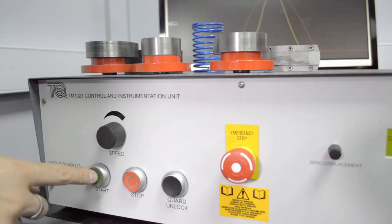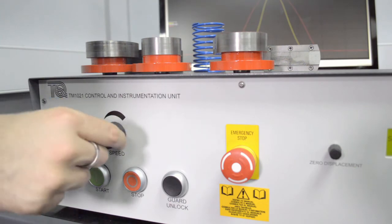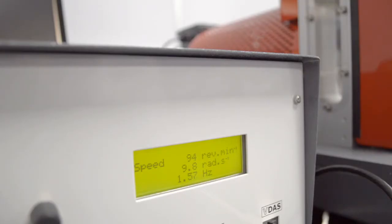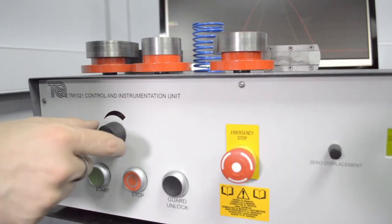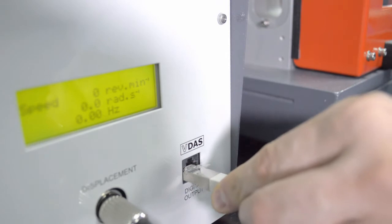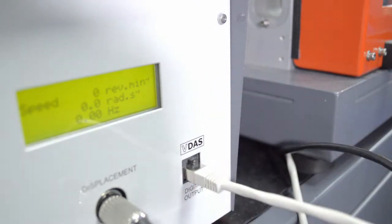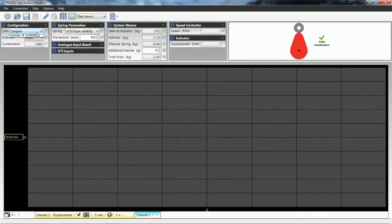A control and instrumentation unit allows students to vary the cam speed. It also includes a microprocessor controlled multi-line display of cam speed in revolutions per minute, radians per second, and rotational frequency in hertz.